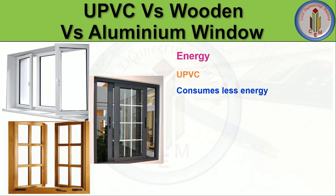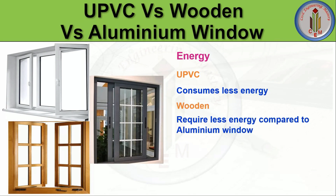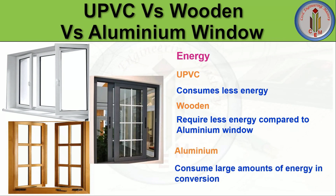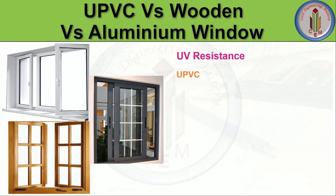Next is energy consumption. uPVC consumes less energy in converting raw material to finished goods. Wooden windows also require less energy compared to aluminium. Aluminium windows consume a large amount of energy in conversion — significantly more energy is needed to convert raw aluminium into finished window products.